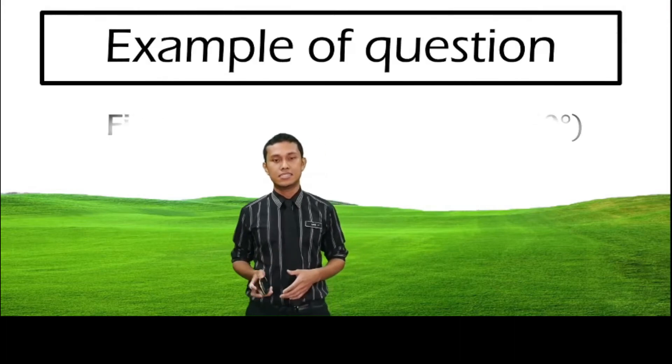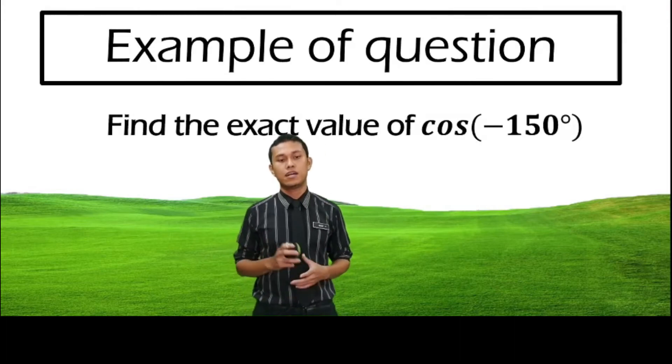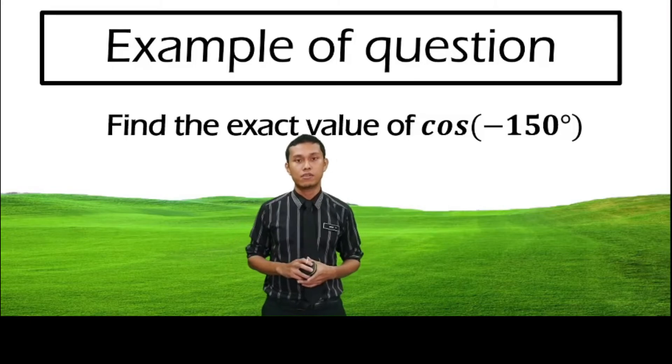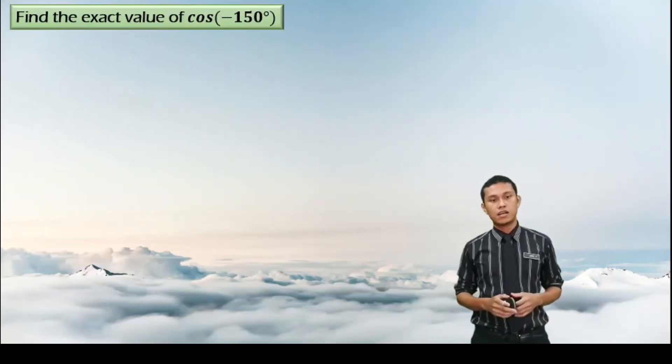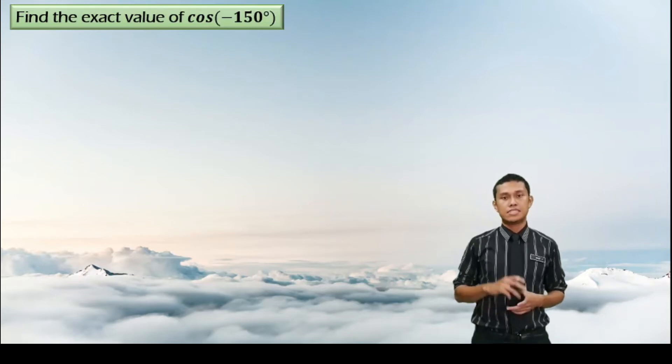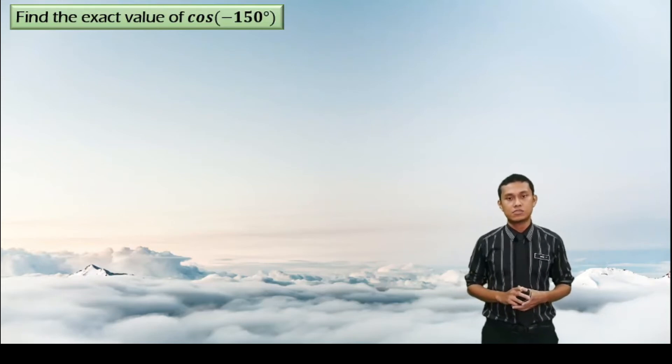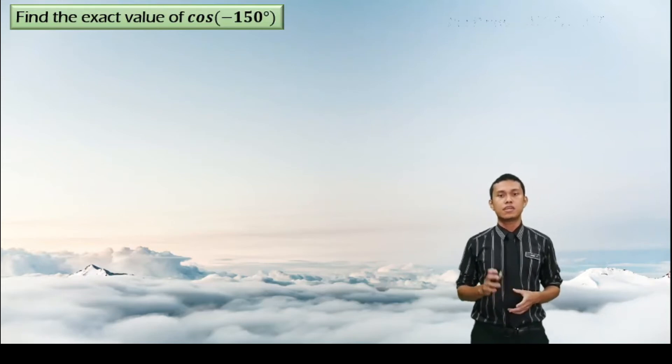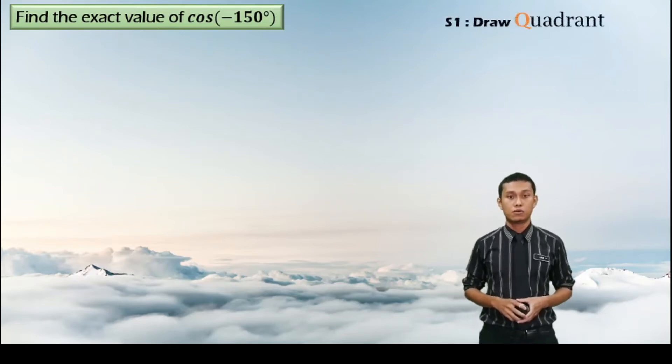So the question that we will discuss for today is this question. The question asks for value for cos negative 150 degree. So since the question asks to find cos negative 150 degree, we need to use this QBHC method technique to answer this question. So we start with the first step, which is draw a quadrant.